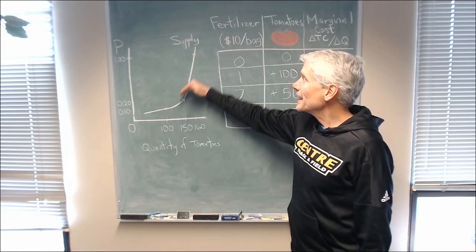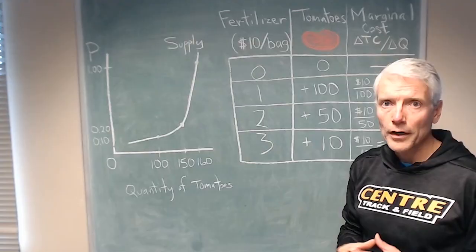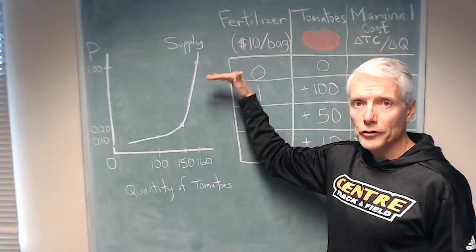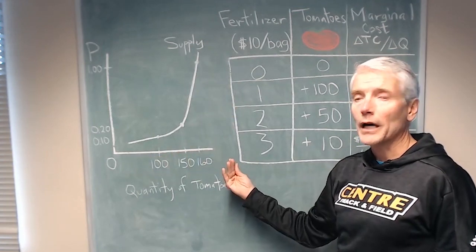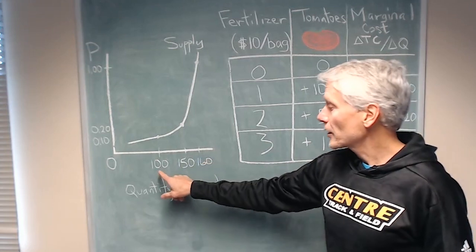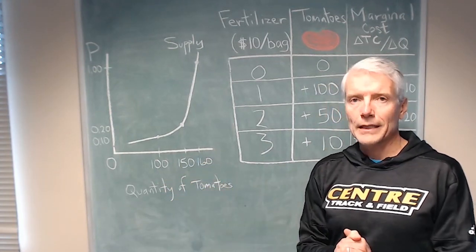We see increasing additional or marginal cost. And that additional cost of supplying more and more units increases as more units are supplied. It costs more to produce the 150th tomato than it costs to produce the 100th. So how do we explain that?